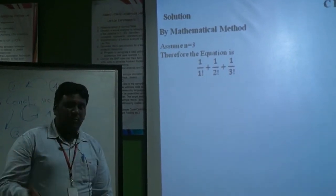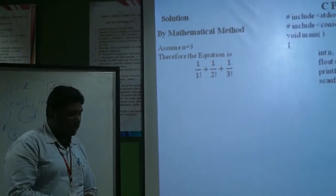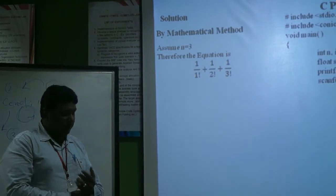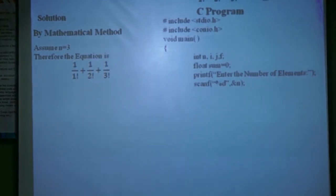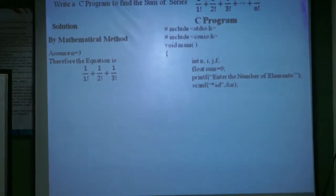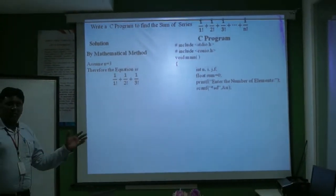When it goes with the C programming, the initial requirement is we need to declare the variables: n for number of elements to read, i and j for running the for loops, f is to find the factorial value, and sum is to find the entire sum value.